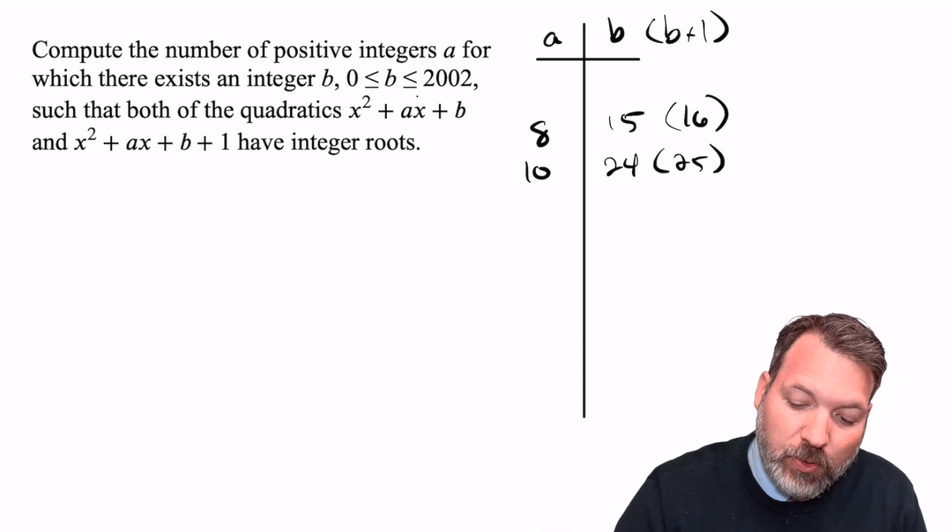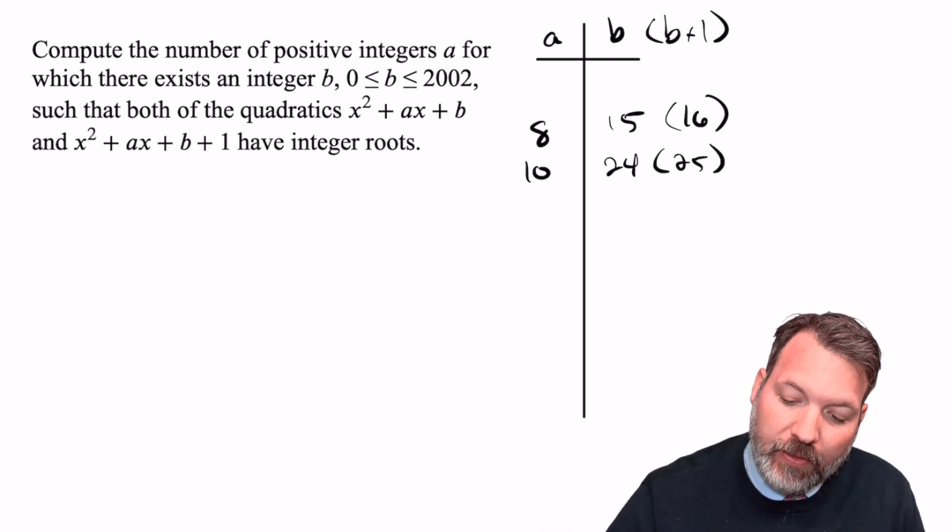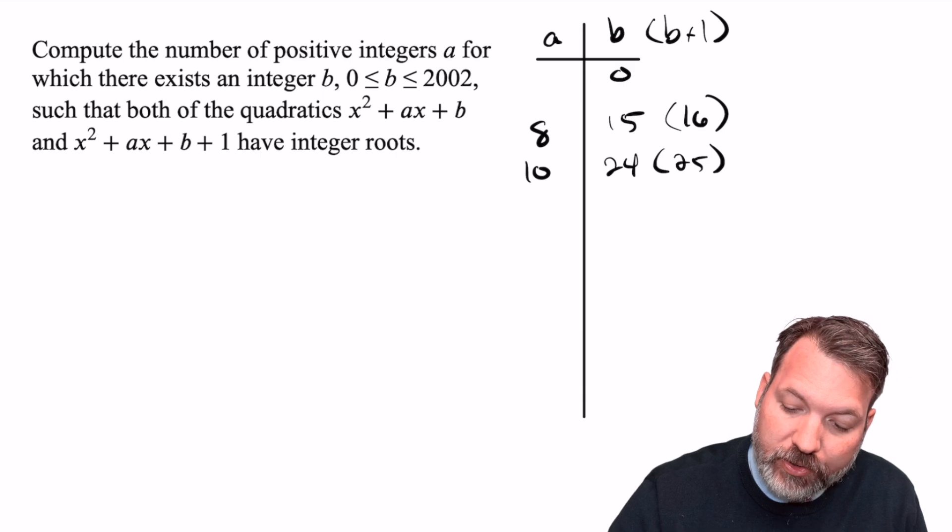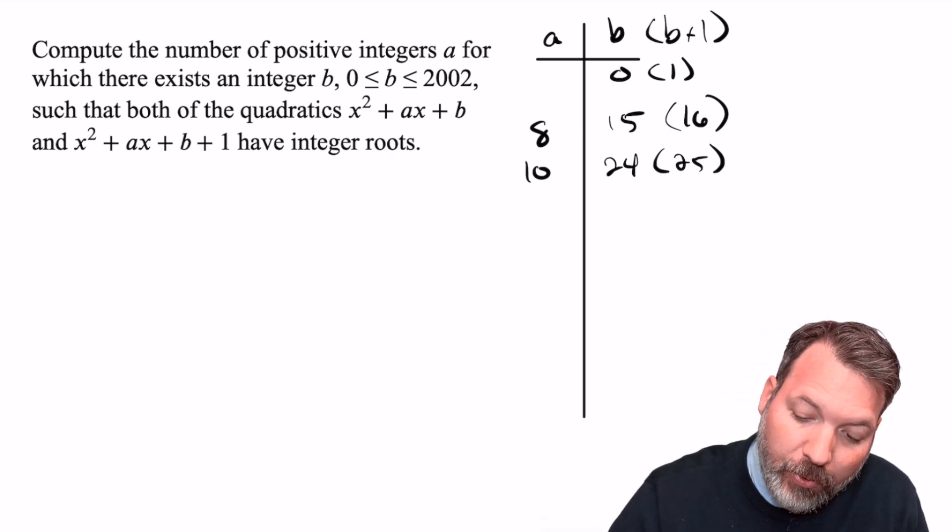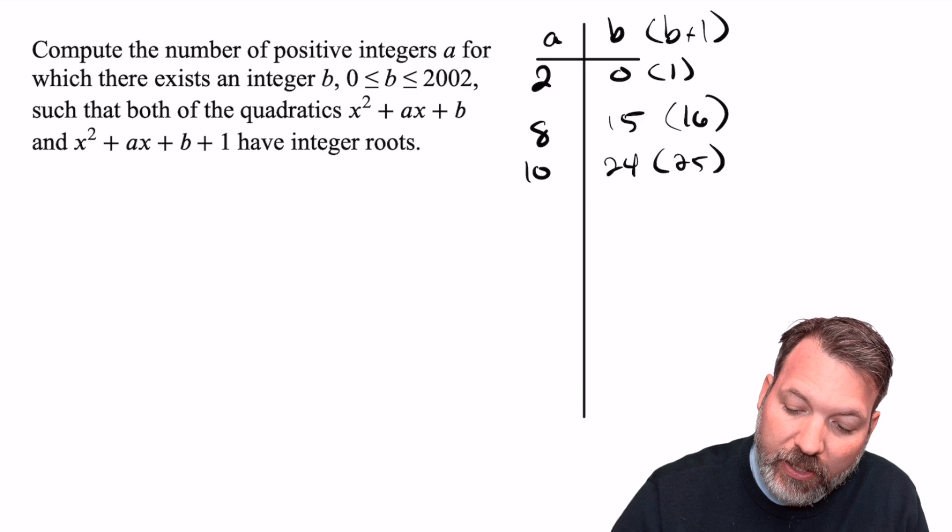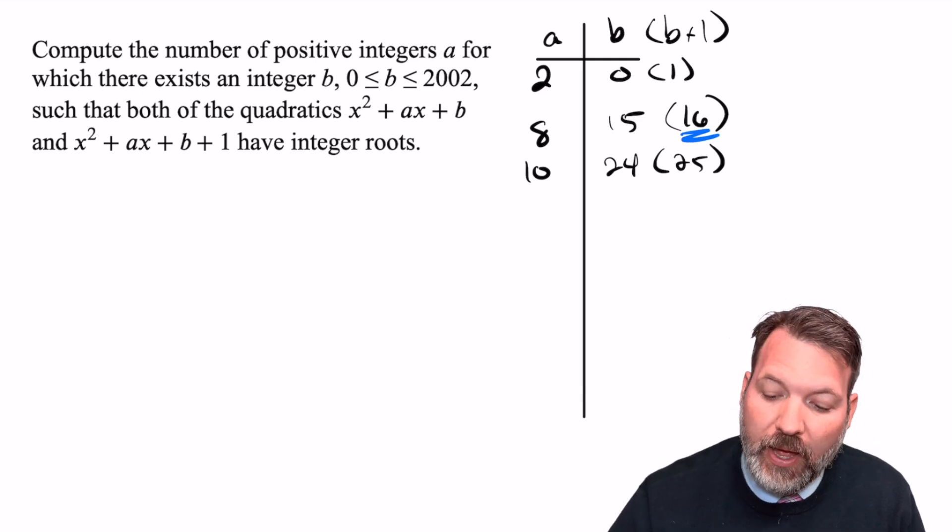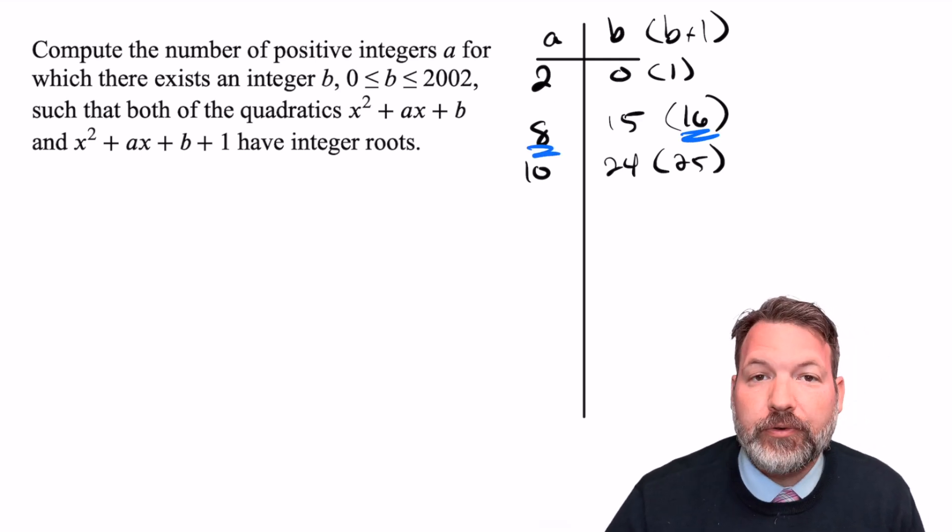I want all the perfect squares that are less than or equal to 2002. That's going to begin at B equals zero, which would give us a perfect square of one. Again, the squares are the things that are one larger in every case here. And that would correspond to A equals two, because what we're doing in each case is taking the square root and then doubling that to get our value for A.